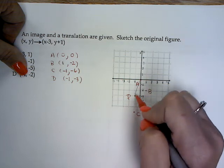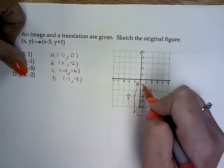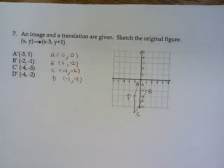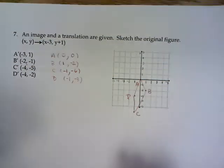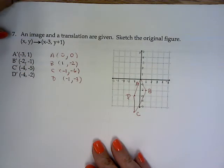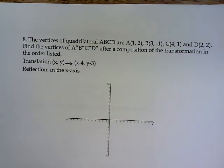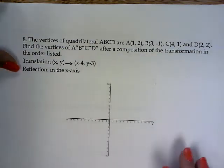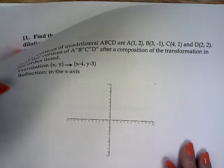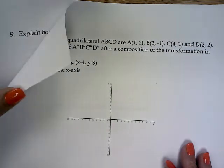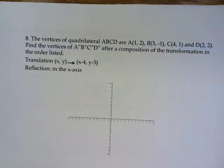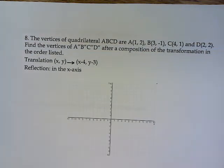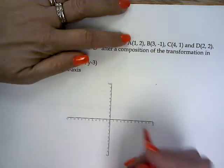And then here, to get negative 4, I had again negative 1. To get negative 2, I had negative 3. Negative 3 plus 1 is negative 2. And then, of course, just sketch my quadrilateral. Okay, on number 8.